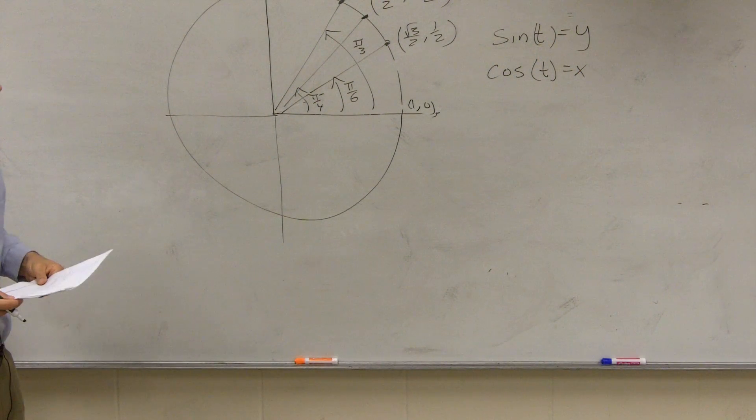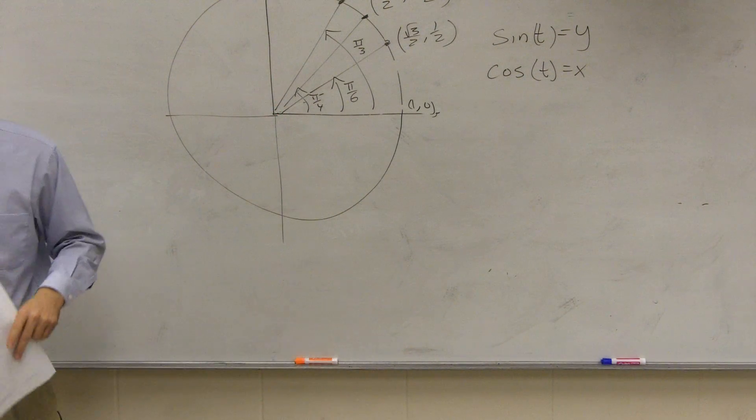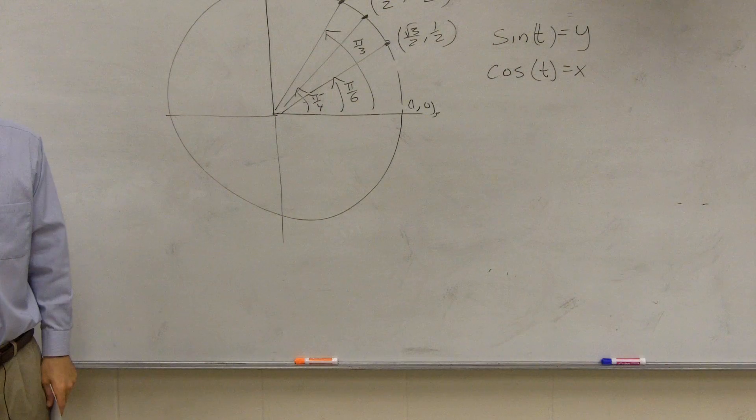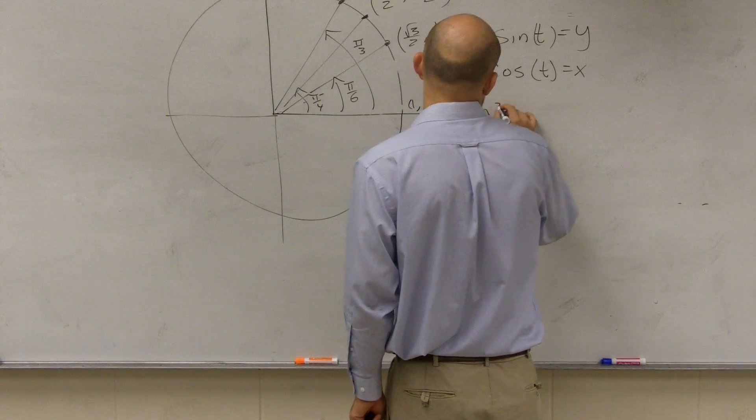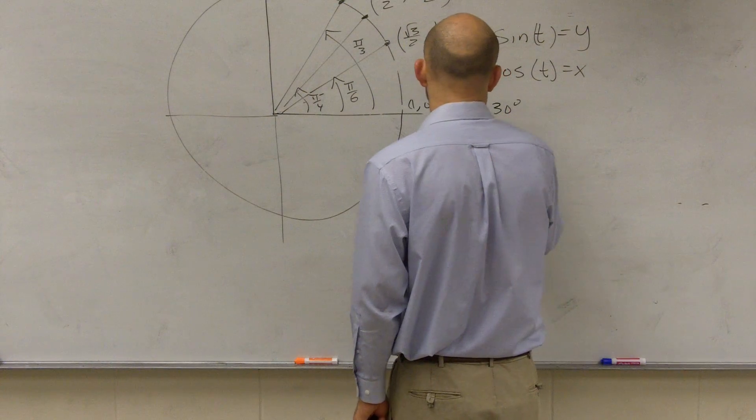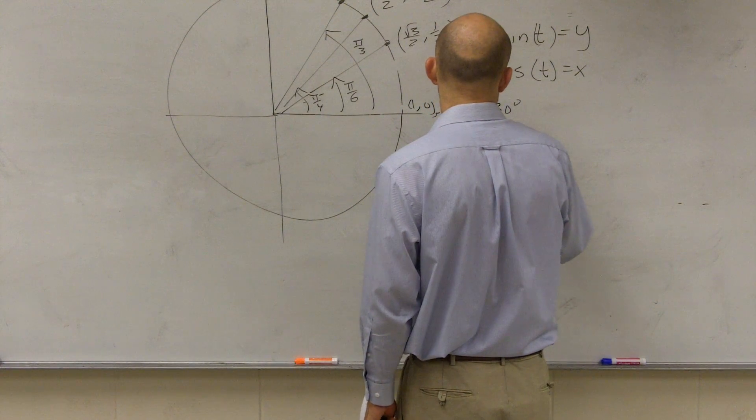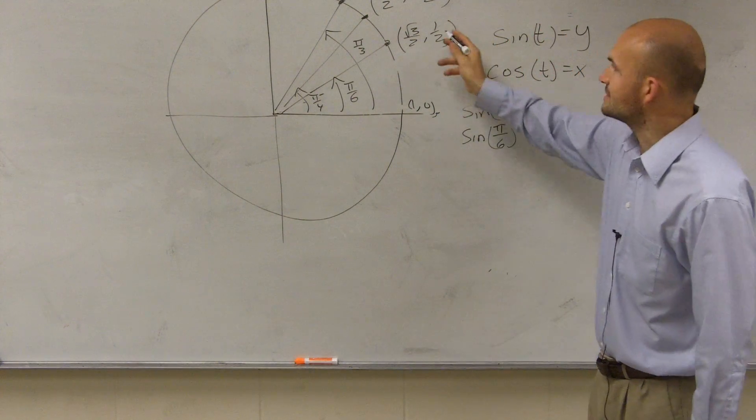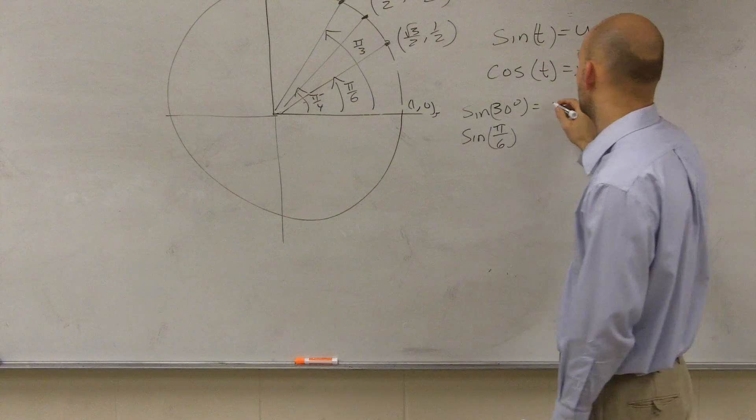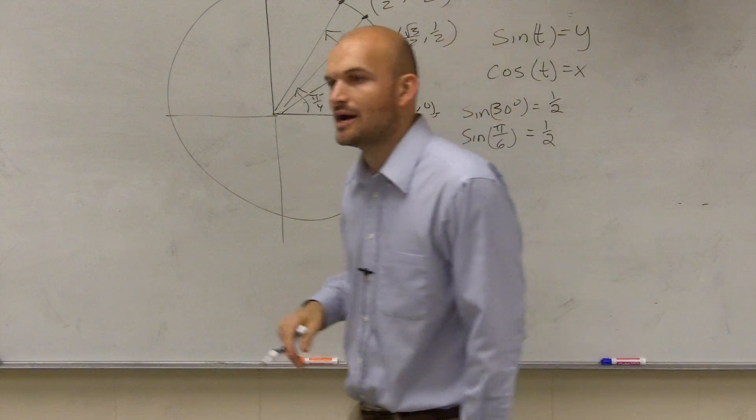So what you guys need to understand is when looking at these functions, hopefully when you guys wrote these down, you guys noticed there were some similarities, because if I say what is the sine of 30 degrees, or the sine of pi over 6, either way, you guys noticed that that value was what? 1 half, right?